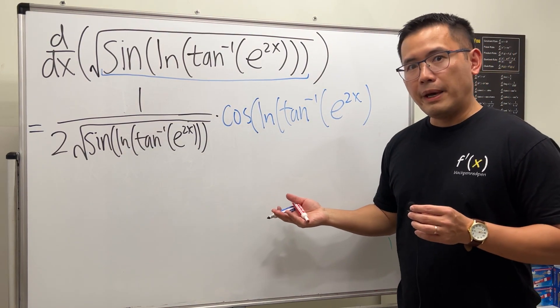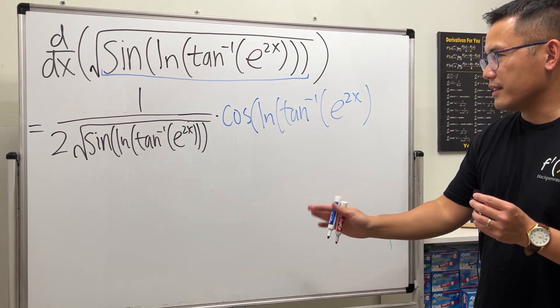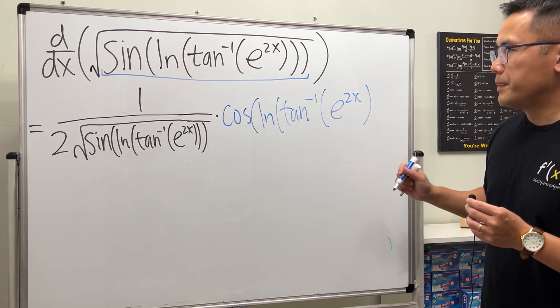And as you can see, I run out of space. So I'm just going to write it down the next line. And then it's just all multiplication, right?